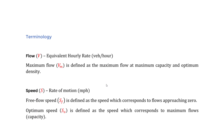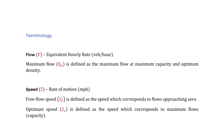Before we do that, let's quickly define certain terms found in the handbook. The first is flow rate. Flow is defined in the handbook as V — don't confuse V with velocity here; V is like Q, the flow rate. Flow under the Greenshield model is V, representing the equivalent hourly rate in vehicles per hour entering the segment. The maximum flow Vm is defined as the maximum flow at maximum capacity or optimum density.